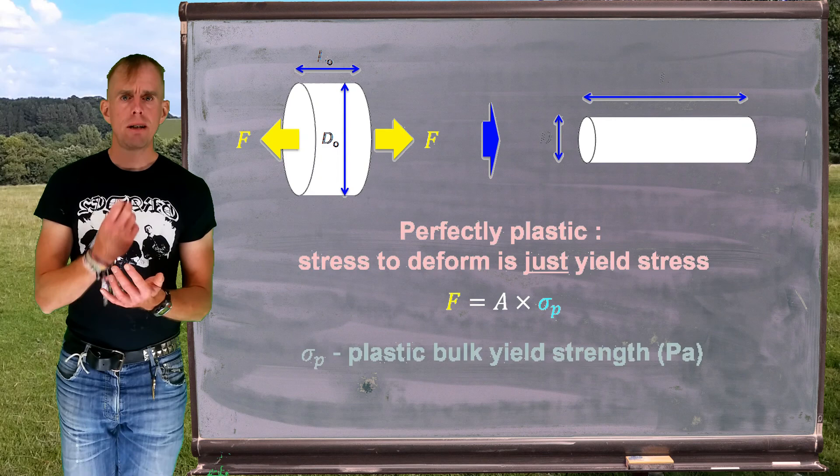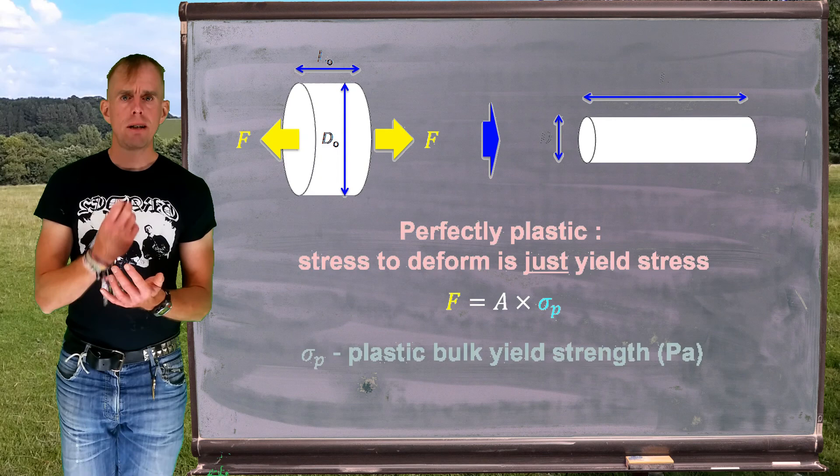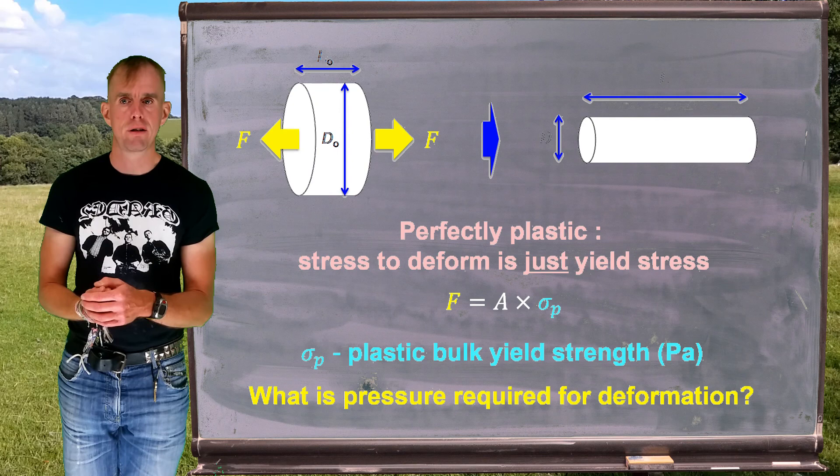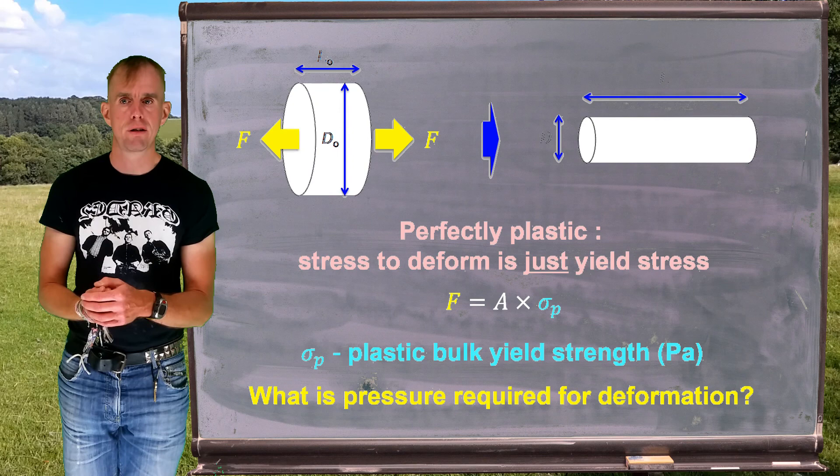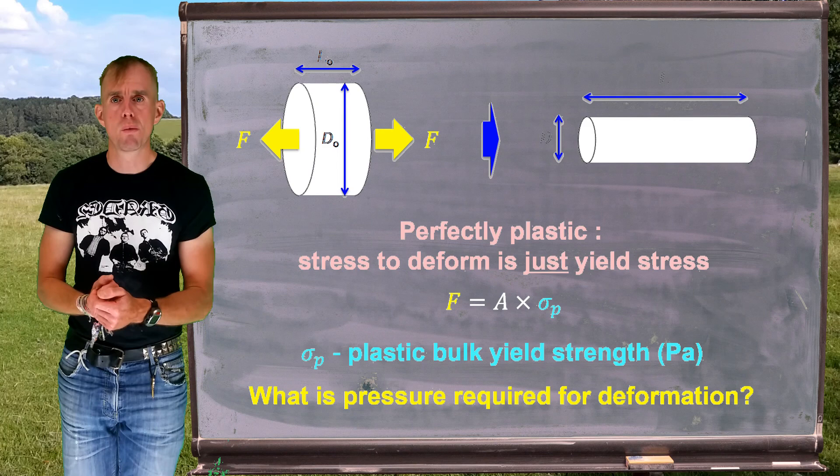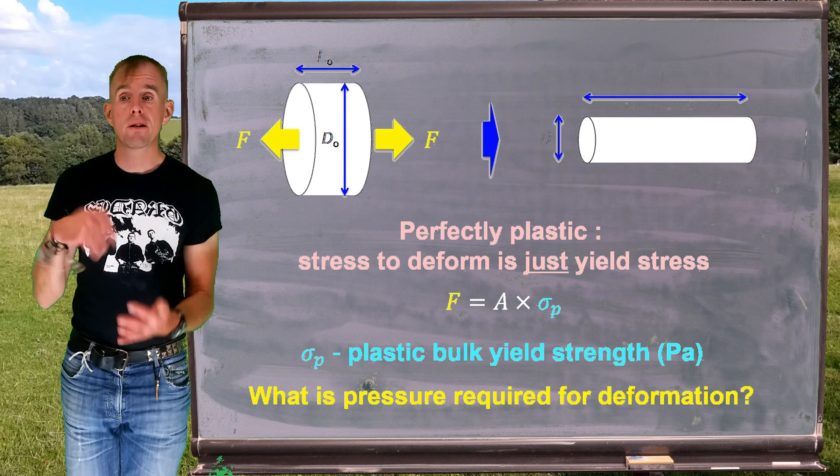So let's have a think. A perfectly plastic material only requires a yield stress to deform. So this force is a measure of the cross-sectional area of that cylinder multiplied by a quantity called sigma p and this is the plastic bulk yield strength of the material. If we're thinking engineering terms we need to figure out how much work is required to make that deformation happen and the most common measure of work is volumetric work and volumetric work is something that we simply know as pressure. So how does extrusion pressure relate to deformation of material?